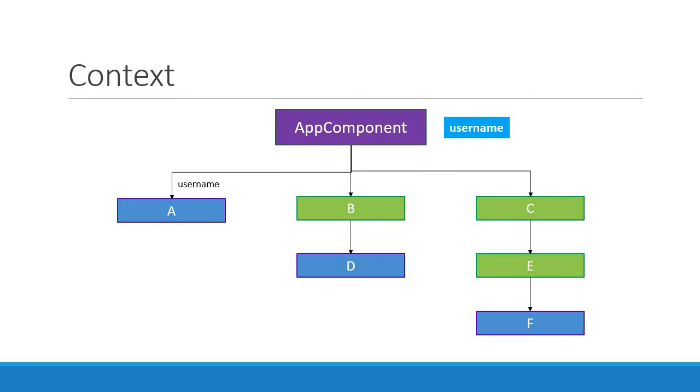For component D however, we have the intermediate component B. So we have to pass down the username as a prop to component B, and that in turn has to pass down the prop to component D.